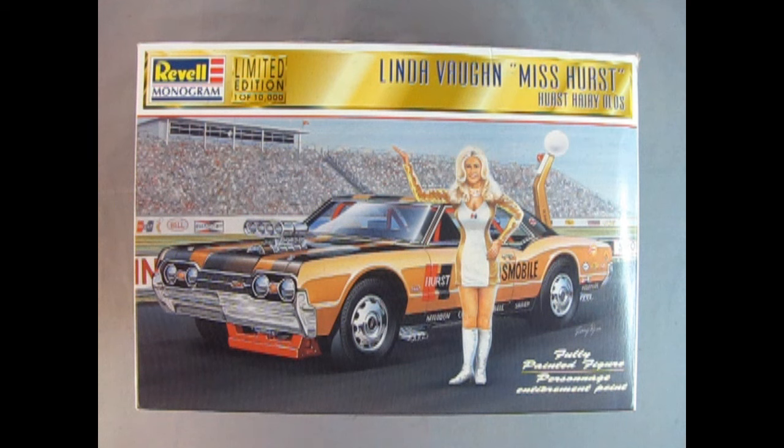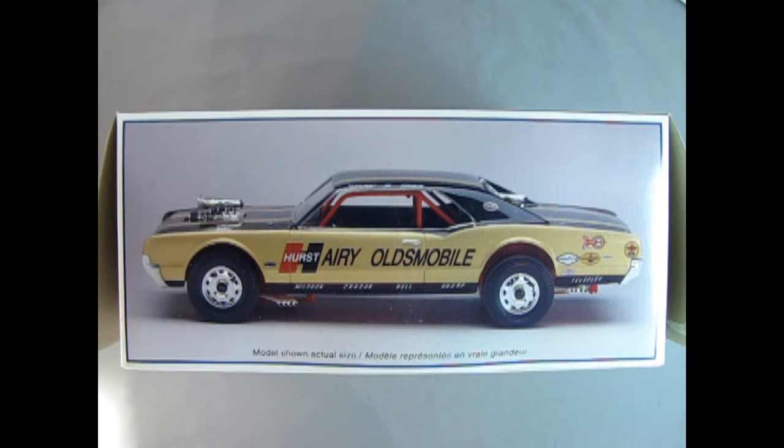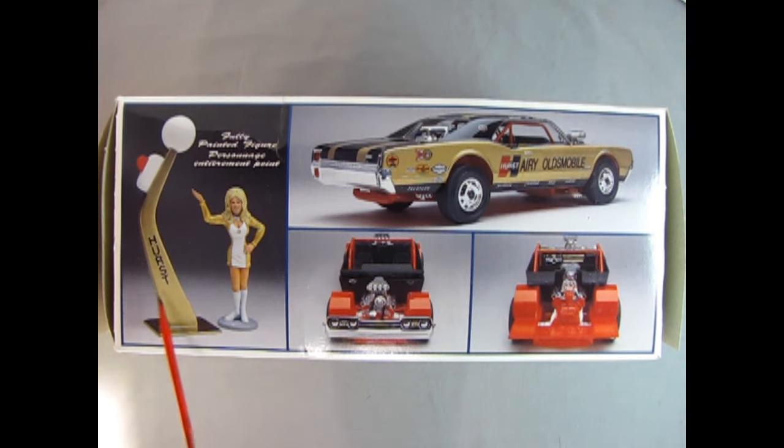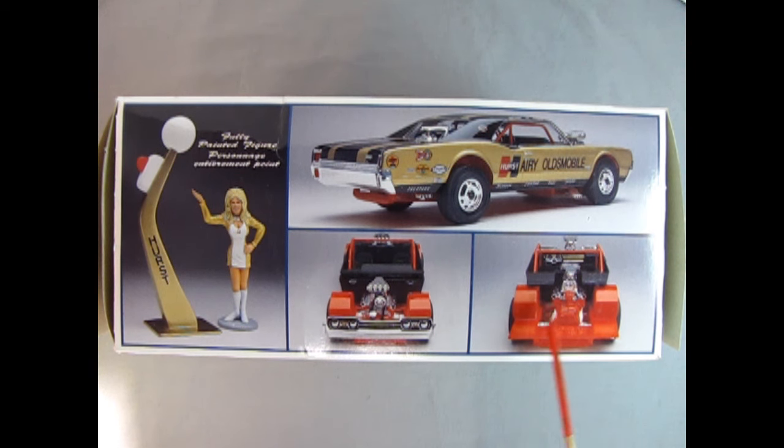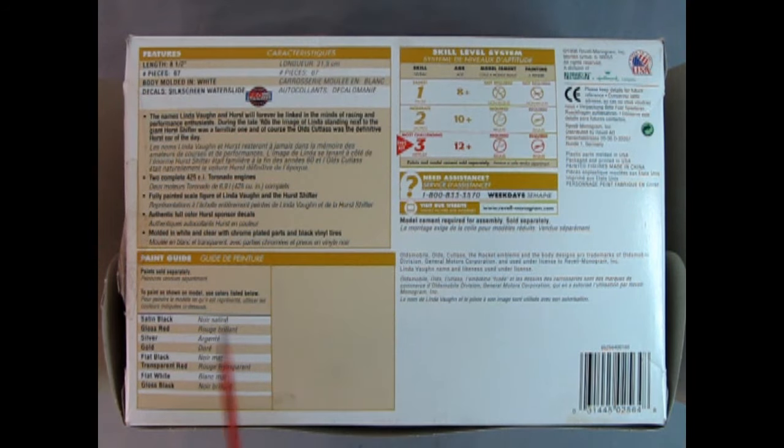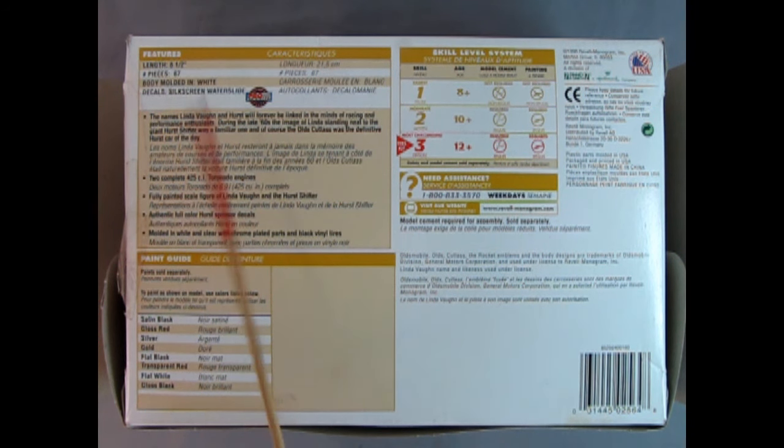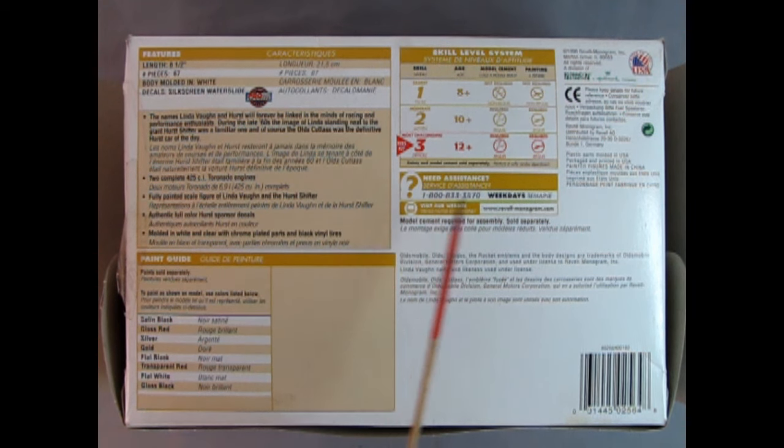This is a 1:24 scale plastic model kit with a fully painted figure of Linda Vaughn and the Hurst Golden Shifter in the back. The box shows photographs of the model in actual size. We have the full Hurst Golden Shifter and Miss Linda Vaughn, plus rear three-quarters views and the car with the top off showing engines in both the front and back. These are Toronado engines meant for front-wheel drive, put in both ends. The model is eight and a half inches long with 67 pieces. The body is molded in white with silkscreen waterslide decals. This is a skill level three kit intended for ages 12 and up, requires paint and glue.